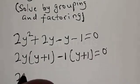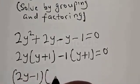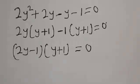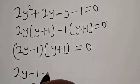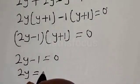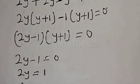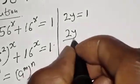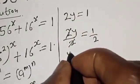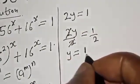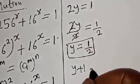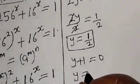Then we have (2y minus 1) times (y plus 1) is equal to 0. So either 2y minus 1 is equal to 0, giving 2y equals 1, and dividing both sides by 2 we get y equals 1 over 2. That is the first value of y. For the second case, y plus 1 equals 0, so y equals minus 1.